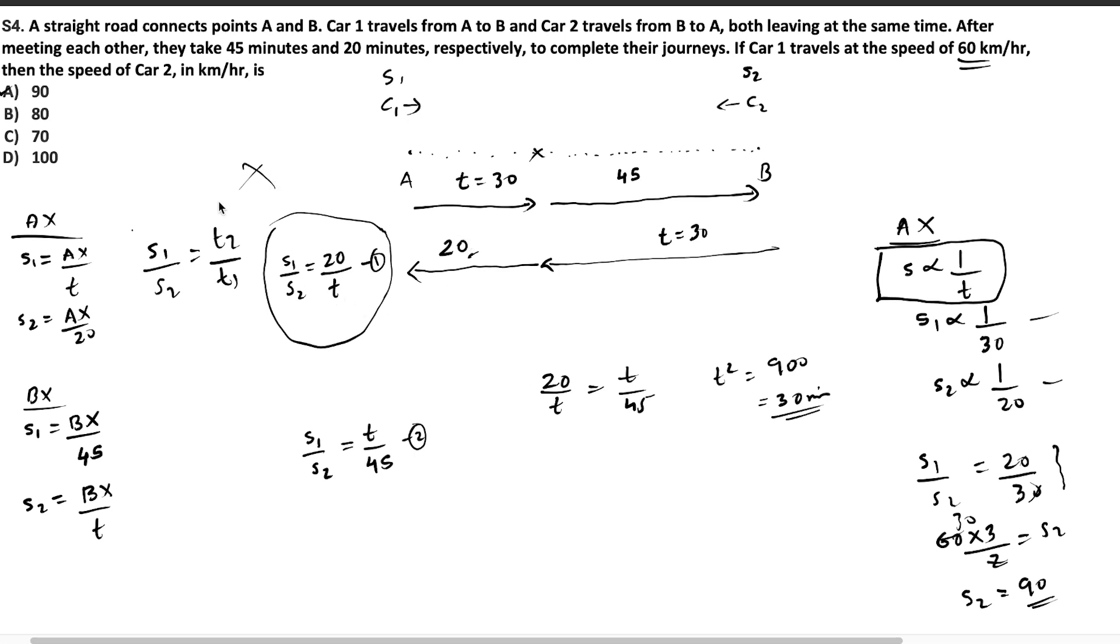For example, instead of doing all these things, you could have just simply written the ratio between the time taken by car C1 which is T and time taken by car C2 to travel the stretch from A to X which is 20, which will be same as ratio of time taken by car C2 to travel from X to B which is 45 and time taken by car number 1 to travel from X to B which is T. So you would have reached T square is equal to 900 without going through all these equations. I hope you understood this.